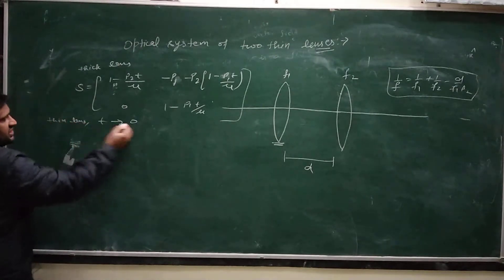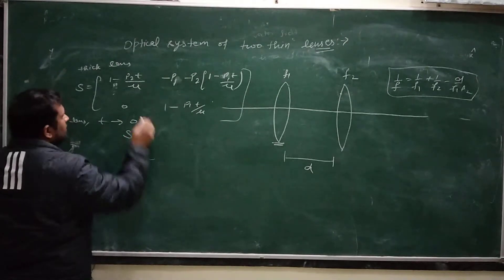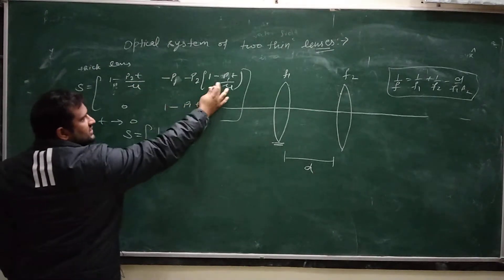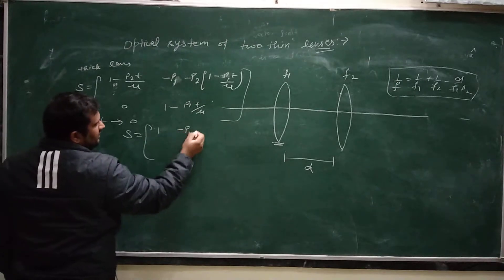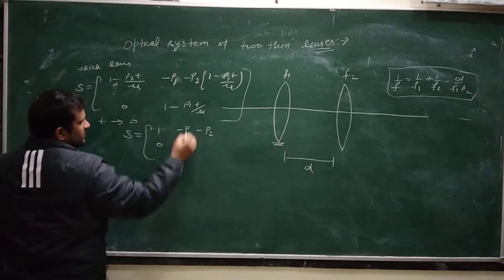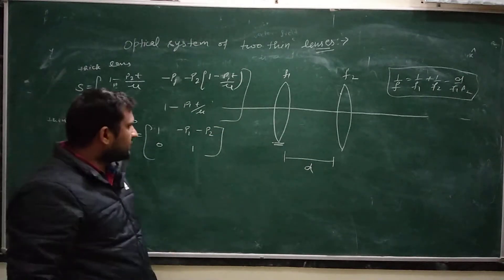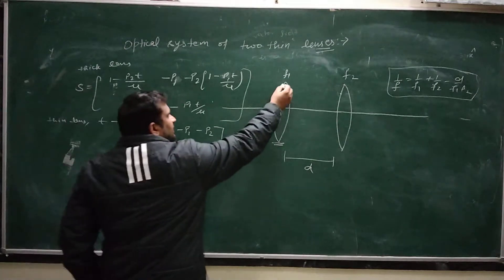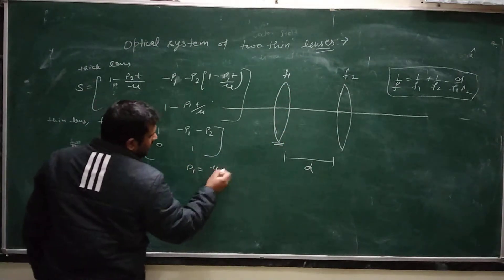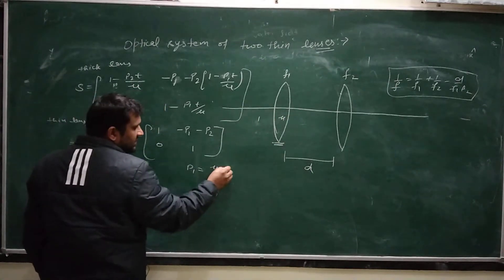For the thin lens, t reduces to 0, and the system matrix for the thin lens becomes: [1, 0; −(p1 + p2), 1]. Here p1 has the value of the refractive index minus the refractive index of the surrounding medium, divided by the radius of curvature.